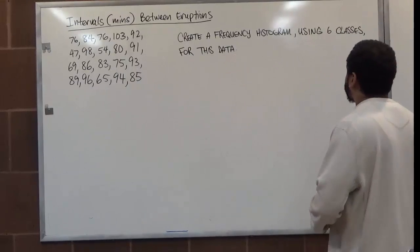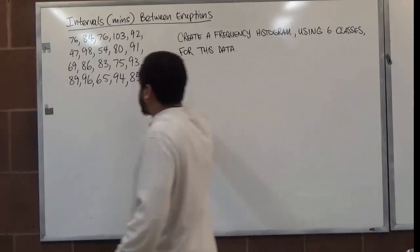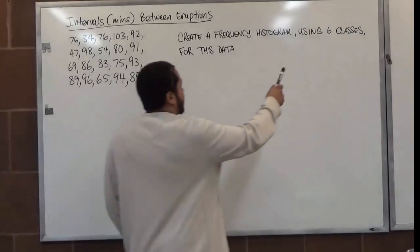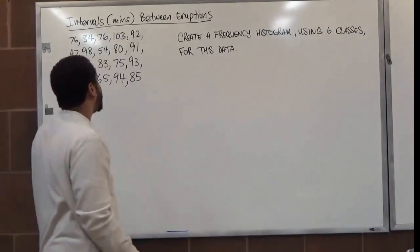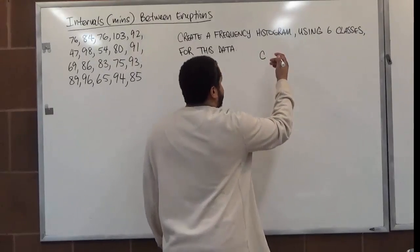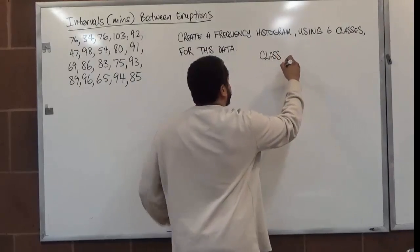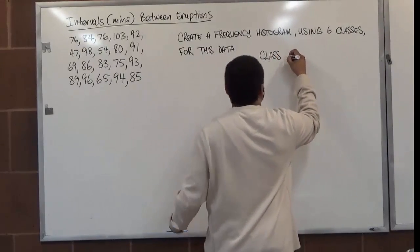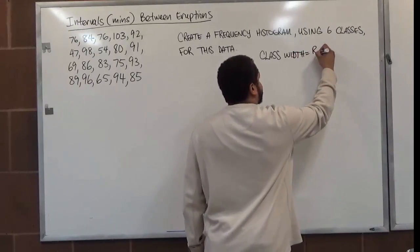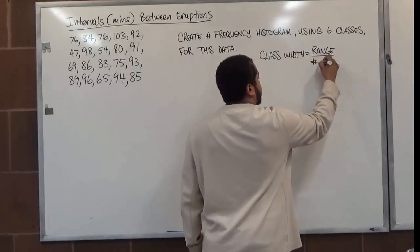The first thing we want to do when creating a histogram for this data is take our values and find the range of the data so we can create a class width, because we know we have six classes to make. The class width will be used to create the classes of the histogram and will tell us the separation between values for every class.